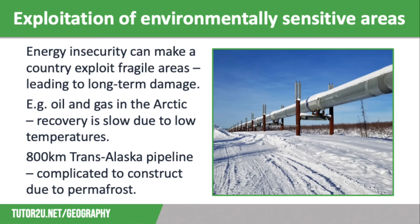One region at risk of environmental harm due to resource exploitation is the Arctic. Drilling for oil and gas takes place here despite the environment being really fragile, and recovery from damage is very slow due to the low temperature and short growing season. In the 1960s, vast reserves of oil were discovered onshore close to the northern coast of Alaska, and oil production began in the late 1970s, producing around 2 million barrels a day. The 800km Trans-Alaska Pipeline, which you can see on the screen, was constructed to transfer oil to the south coast port of Valdez, as ice in the northern seas meant oil tankers couldn't get close to the coastline. The pipeline was complicated to construct because of the permafrost, meaning it had to be raised off the ground and mounted on stilts 11 metres deep.